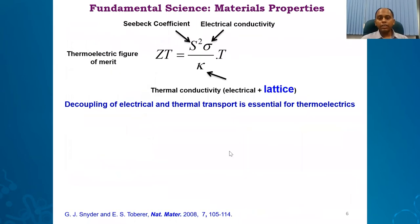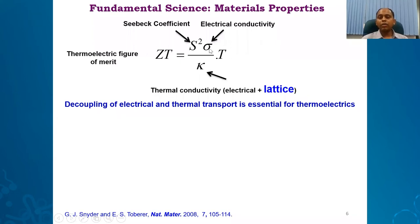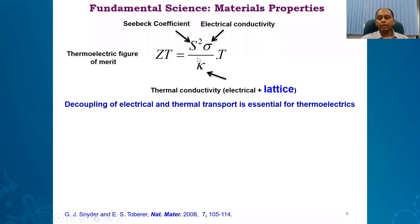The numerator of the ZT equation contains S, the Seebeck coefficient — meaning how much voltage a material generates per unit temperature difference, essentially delta V divided by delta T. It also contains sigma, the electrical conductivity: how fast electrons and holes move in a solid material, which depends on carrier concentration and mobility. T is the temperature.